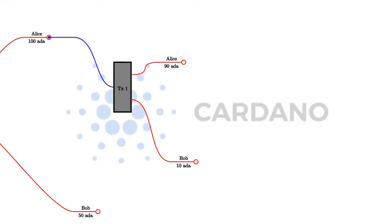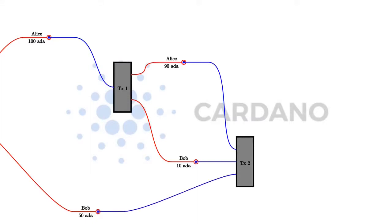Let's do one other example, a slightly more complicated one, where Alice and Bob together want to pay 55 ADA each to Charlie. They create a transaction together. Alice has no choice — she only has one UTXO so she uses that one. And Bob also doesn't have a choice because neither of his two UTXOs is large enough to cover 55 ADA, so Bob has to use both his UTXOs as input. This time we need three outputs: 55 plus 55 equals 110 ADA for Charlie, and then two change outputs — one for Alice's change and one for Bob's change. Alice paid 90, so she should get 35 change, and Bob paid 60, so he should get 5 change.